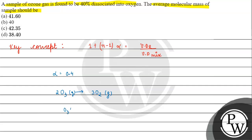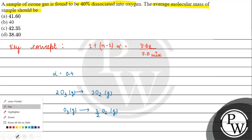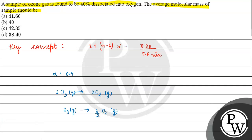तो अगर हम 1 mole के लिए देखें तो हमारे पास आएगा 3 by 2 moles of oxygen. तो हमारे पास N की value क्या आगई? N आजाएगा हमारे पास 3 by 2.